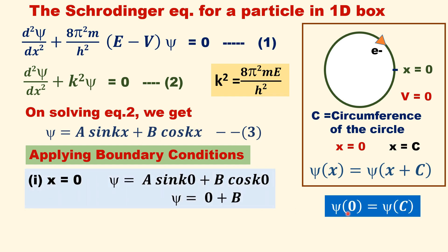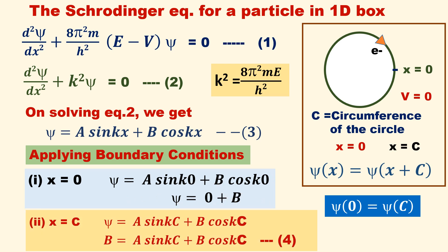There are two boundary conditions. Psi at x equal to 0 equals psi at x equal to c. Applying boundary condition 1, substituting x equal to 0: A sin(k·0) plus B cos(k·0). Since sin 0 equal to 0 and cos 0 equal to 1, therefore psi equal to B. Now applying boundary condition 2 at x equal to c: A sin(kc) plus B cos(kc) equals B. Call this equation 4.